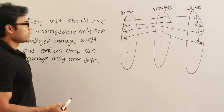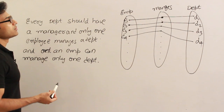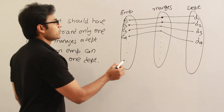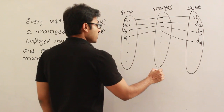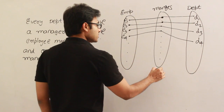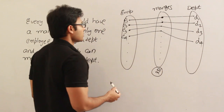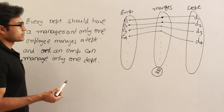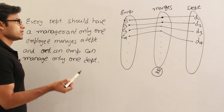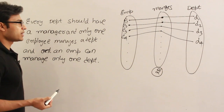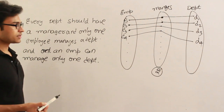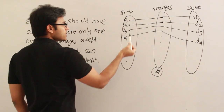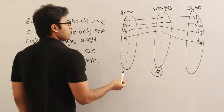Now let's analyze various factors. What is the degree of the relationship? How many entities are participating? Two entities — so the degree is two. Then what about the cardinality? Cardinality is the maximum number of relationships in which each entity can participate. What is the maximum number of relationships this entity can participate in? Only one, because an employee can manage only one department.